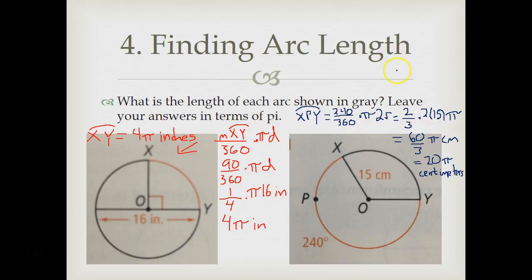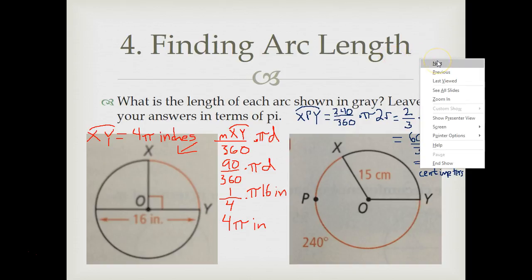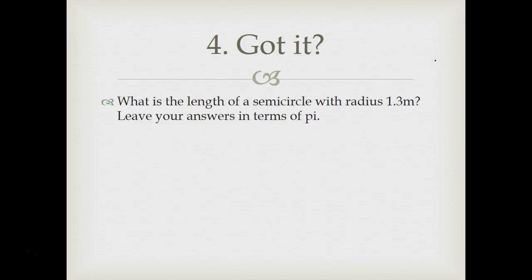Now we have arc length. Next slide. It says, what's the length of a semicircle? What is the arc length of a semicircle with radius 1.3 meters? Leave your answers in terms of pi. So go ahead and pause the video. Take a moment to do this for me, please. Thank you so much. When you get done, we'll talk about it here shortly.